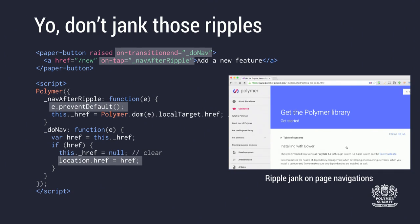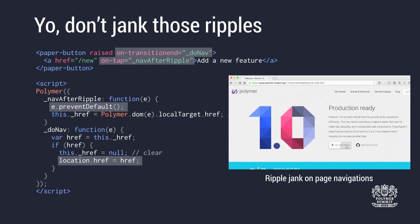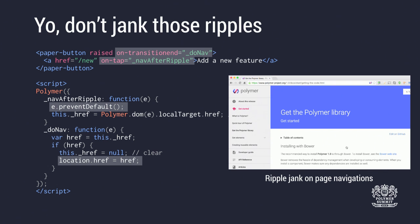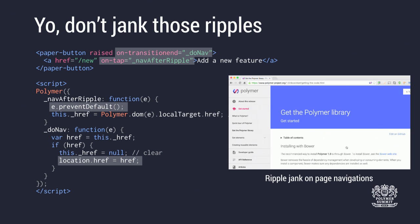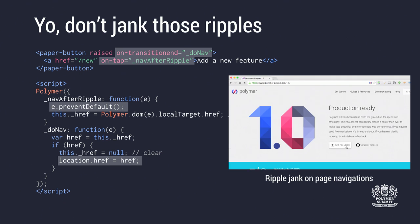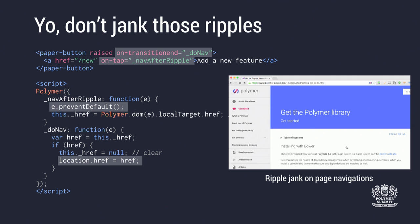Don't jank those ripples. A really common issue is putting an anchor inside a paper-button or paper-fab — when you click the button, the ripple stops halfway through because the browser navigates to a new page, interrupting the CSS transition. The fix is to hijack the click on the anchor tag, wait for the transition-end event that the ripple fires, and then redirect the user. Alternatively, use the no-ink attribute on paper-button to remove the ripple entirely.